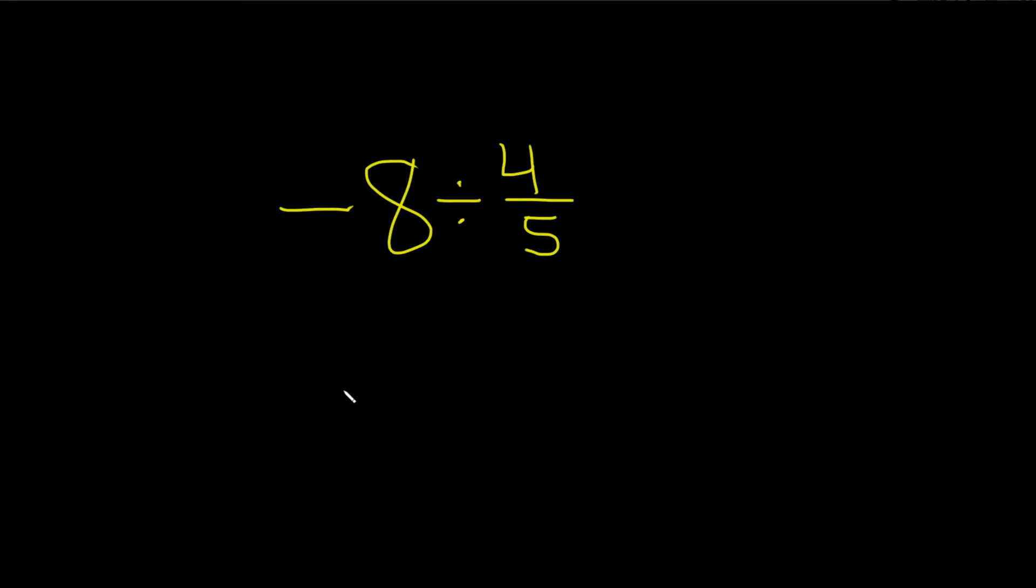Negative 8 divided by 4 over 5. So the very first step in this problem is going to be to write the negative 8 as a fraction. Whenever you have a whole number and you want to write it as a fraction, all you have to do is divide it by 1. You can write this as negative 8 over 1.